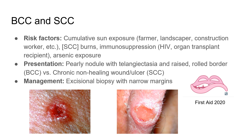Other high-yield skin cancers are basal cell carcinoma (BCC) and squamous cell carcinoma (SCC). Risk factors for both include cumulative sun exposure — questions often hint at this by saying the patient is a farmer, landscaper, or construction worker. For SCC specifically, additional risk factors include chronic burn or healing ulcer, immunosuppression such as HIV or organ transplant patients, and arsenic exposure.